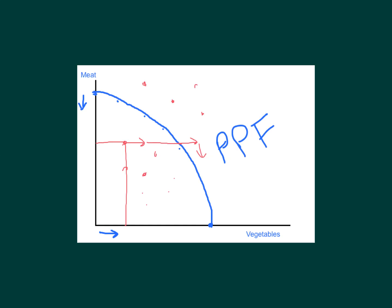One last question on this diagram: where would this particular society decide to consume? Would they want to consume at point A, point B, point C, point D, or point E? Most people when asked this question go with a point like C, because you get roughly equal amounts of meat and vegetables. But the PPF only shows what is possible to produce — it does not on its own tell you what they will produce.